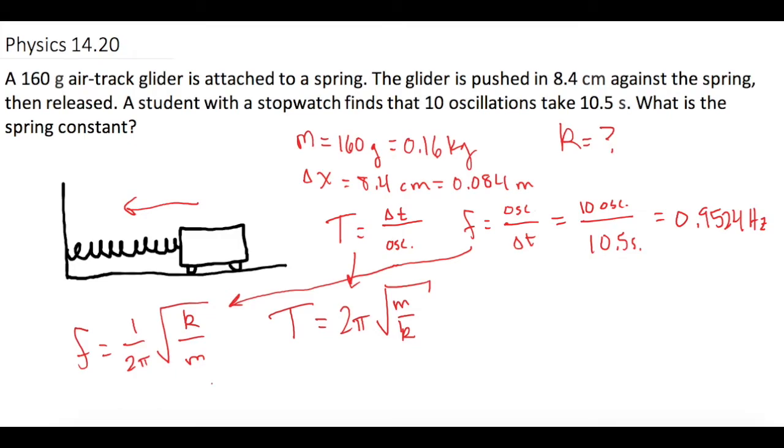Let's use this one and solve for k. If I multiply both sides by 2π, the 2π cancels. Now we're left with 2π times the frequency equals the square root of k over m.